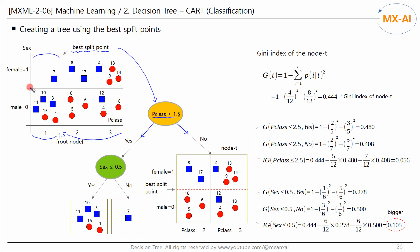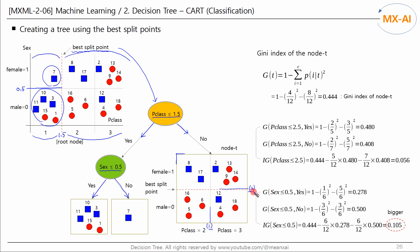The data in the left node has only one split candidate, so this is the best split point. In this node, data points with sex less than 0.5 are assigned to the left node. For the right node — data points where PCLASS is greater than 1.5 — this node has two split candidates. We need to find the best one. To calculate the information gain, we first calculate the Gini index of this node. It has a total of 12 pieces of data: 4 blues and 8 reds, giving a Gini index of 0.444.